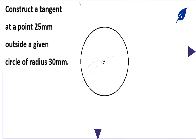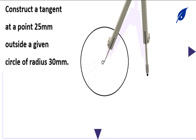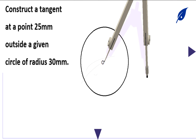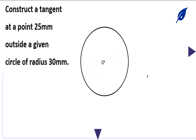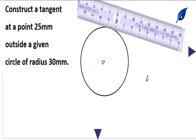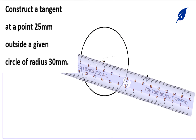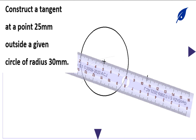Now we've drawn the circle. Mark the starting point which we'll call O — that's the center. Then move to the outside of the circle; anywhere outside the circle you pick a point. You get the total distance which is 25 plus 30 millimeters, which equals 55 millimeters. Mark that point outside the circle and label it P.